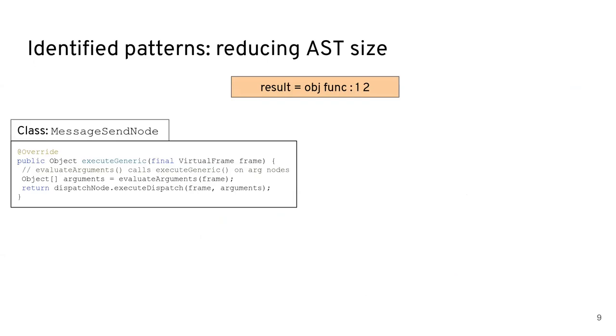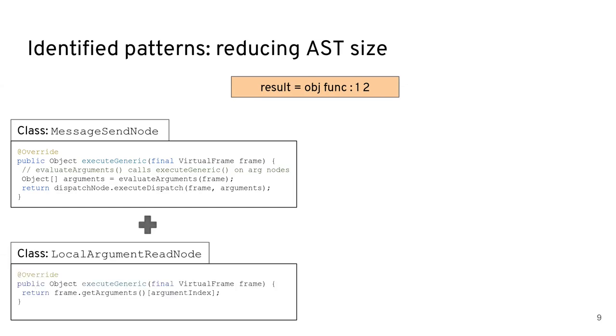In our context, that's going to be a message send node, which is going to send a message. And what the code of that essentially looks like is it evaluates the arguments, which is calling the execute method on all the argument nodes that are fed to it. And then it just dispatches them through a dispatch node and just performs a message send in this way. So in this context, the three arguments would be obj and one and two. An object is going to be a local argument read node to actually access its value,